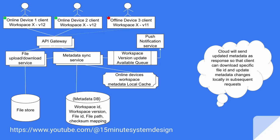Once the cloud accepts the request for down sync, the cloud will send the updated metadata, block content, and file content as a response, so that the client can download specific file IDs and update metadata changes locally in the subsequent request.